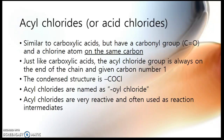We name them as something-anoyl chloride — I'll show you what that looks like in just a sec. These compounds are very, very reactive, and so acyl chlorides are often used as intermediates in reaction processes. If you want to turn compound A into compound B but that doesn't always work so easily, you can turn compound A into an acyl chloride and then turn that into compound B, and it often makes for a much better reaction.